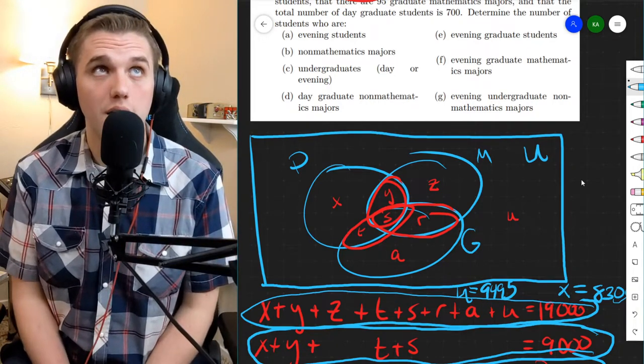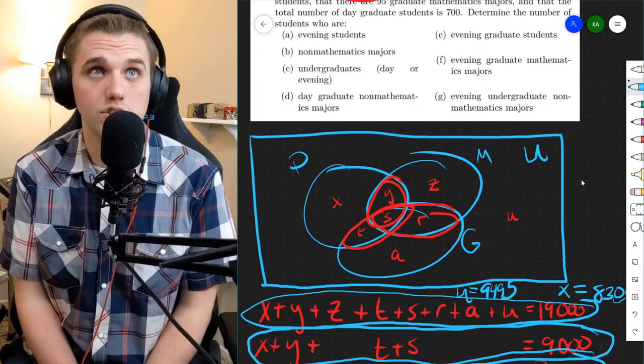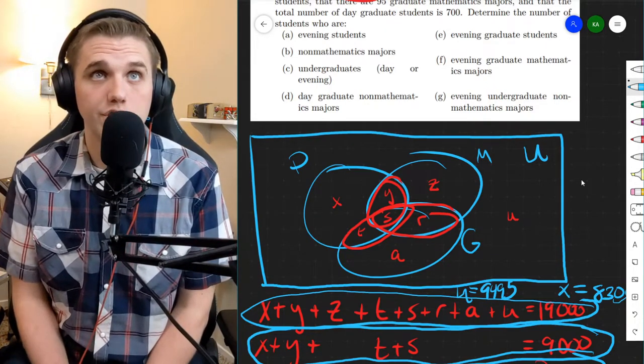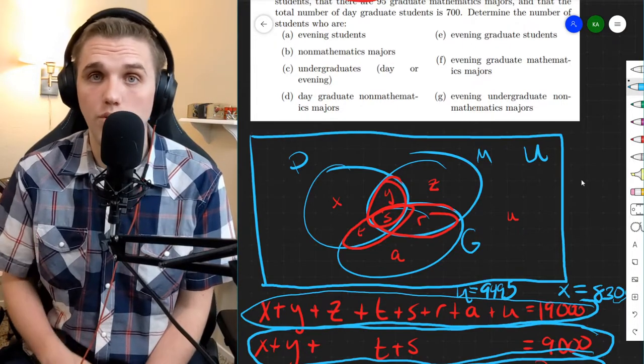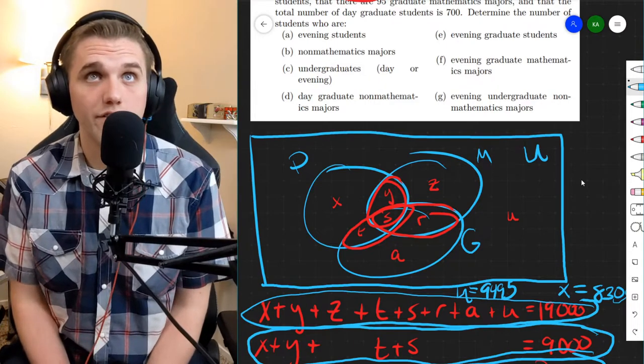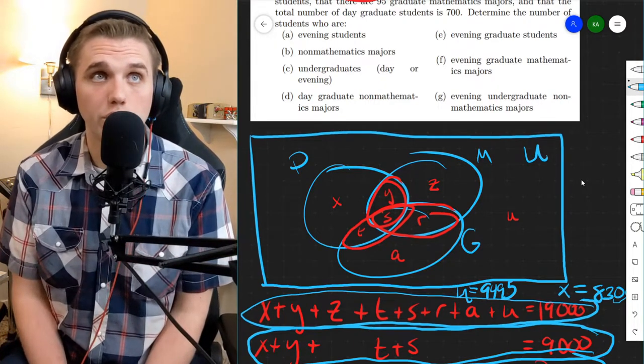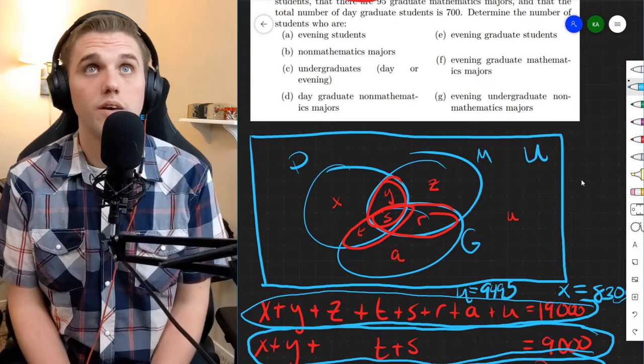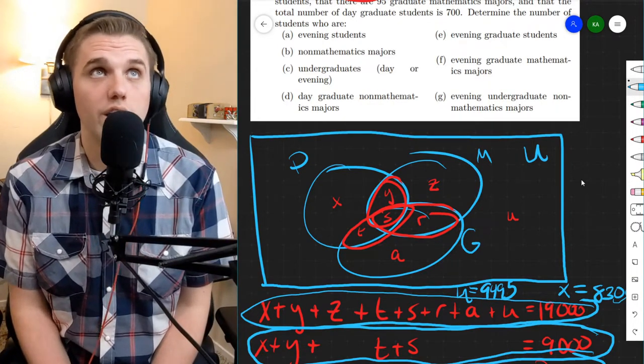So let's go through part A. Part A is the evening students. So everything outside of the day students, which is A, R, Z, and U. You just add up all of those. B, non-math majors. So that's everything outside of M, which includes X, T, A, and U. And so you just add up all of those four letters.